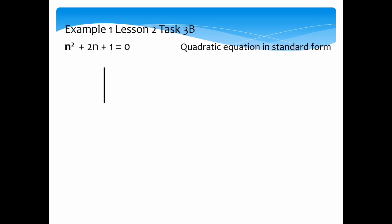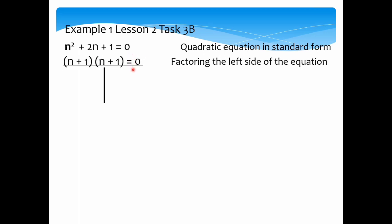Let's proceed to Lesson 2, Task 3D, where we are asked to give the value of a, b, and c, determine the nature of the roots, and find the sum and product of roots. We are given the quadratic equation in standard form: n squared plus 2n plus 1 equals 0. To solve for the roots, we use the factoring method. Factoring n squared plus 2n plus 1 gives us n plus 1 times n plus 1 equals 0.